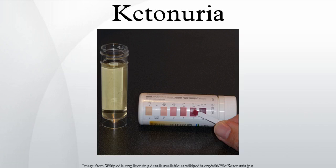Ketonuria is a medical condition in which ketone bodies are present in the urine. It is seen in conditions in which the body produces excess ketones as an indication that it is using an alternative source of energy. It is seen during starvation, or more commonly in type I diabetes mellitus. Production of ketone bodies is a normal response to a shortage of glucose, meant to provide an alternate source of fuel from fatty acids.